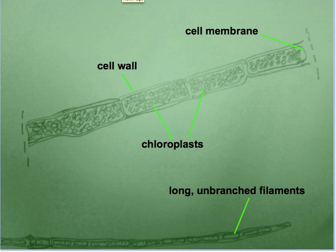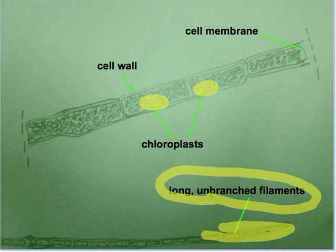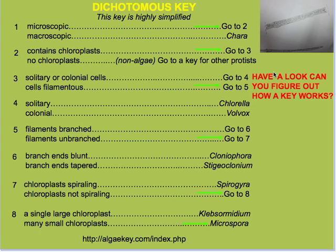This should tell you that you are looking at algae, provided that you've got some basic knowledge of what you're doing. Algae have chloroplasts in their cells — lots of the green stuff used in photosynthesis — and this particular algae is made up of long unbranched filaments. With this basic information in mind, our next step in identification is to look at this key.